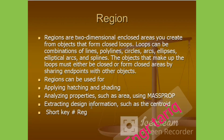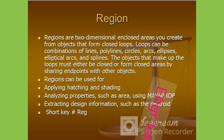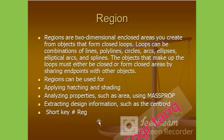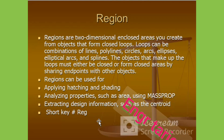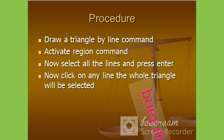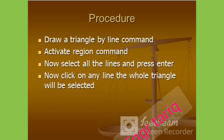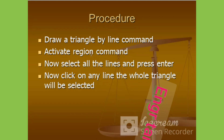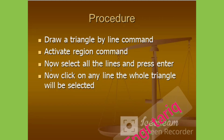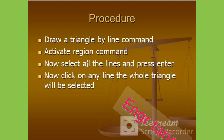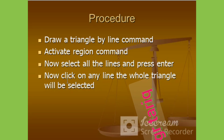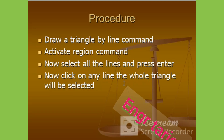Extracting design information such as the centroid. Region procedure: draw a triangle by the line command, activate the region command, then select all the lines and press enter. Now click on any line and the whole triangle will be selected.